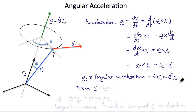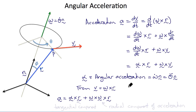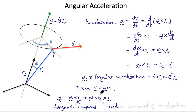Making use again of v = ω × r, that gives a = α × r + ω × (ω × r), a vector triple product. Looking at the direction of this vector, we can see that the first term is the tangential component of a, and the second term is the radial component of the acceleration.